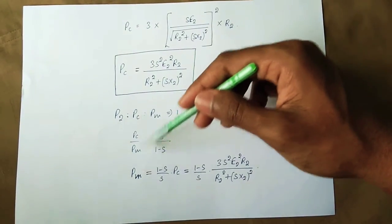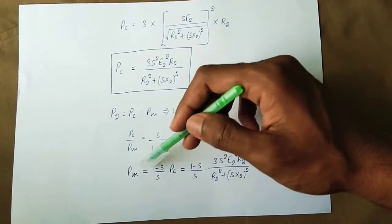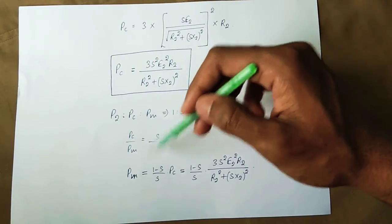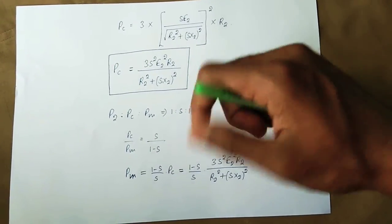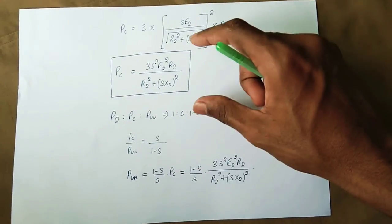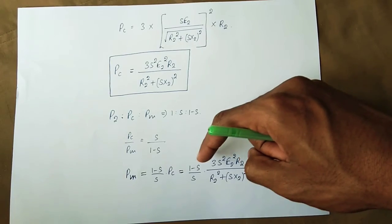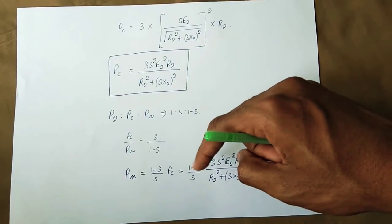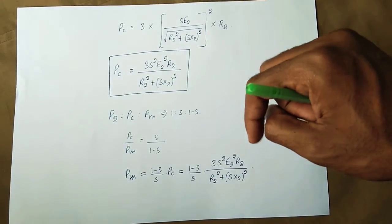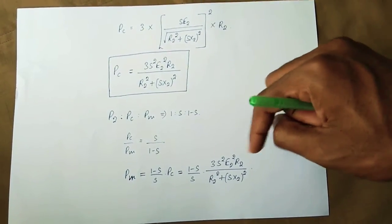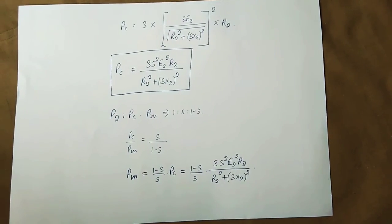Therefore, Pm = [(1 − s) / s] × Pc, which gives Pm = [(1 − s) / s] × [3s² × E₂² × R₂ / (R₂² + (sX)²)].